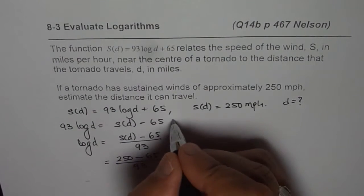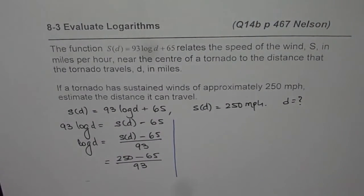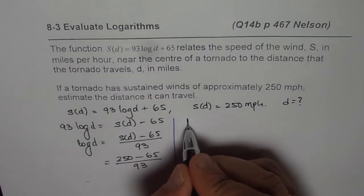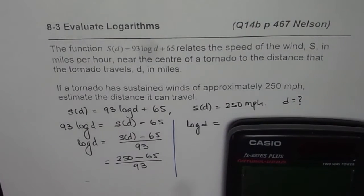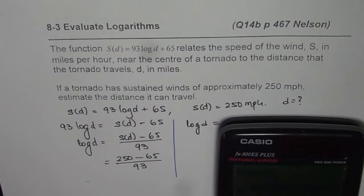And we will write it on the right side and then solve it further. So what we get here is log of D is equal to, let me calculate this, 250 minus 65 divided by 93 is equal to, let's write it in decimals,